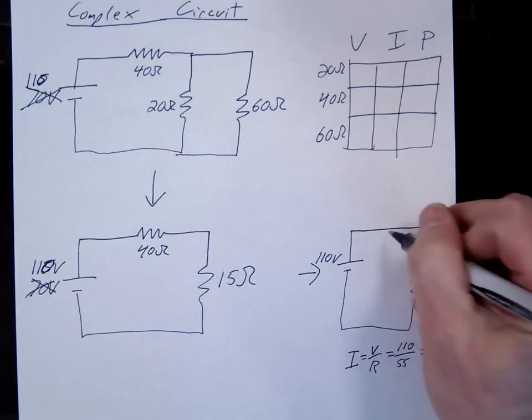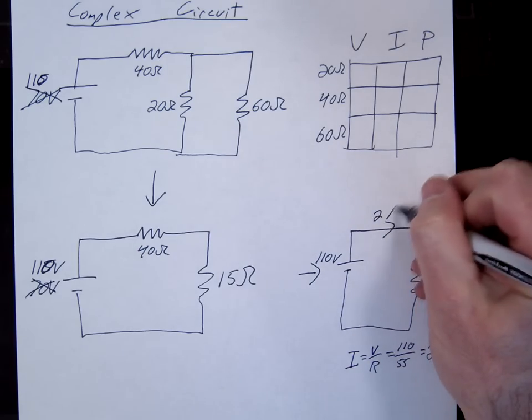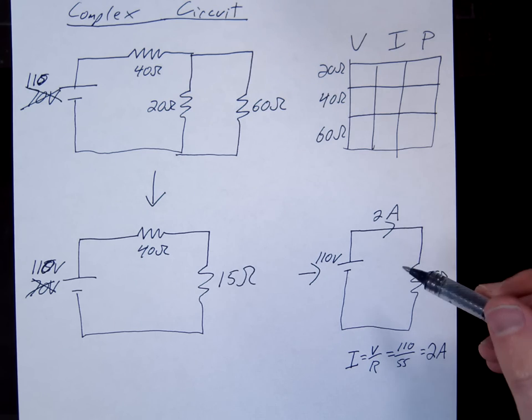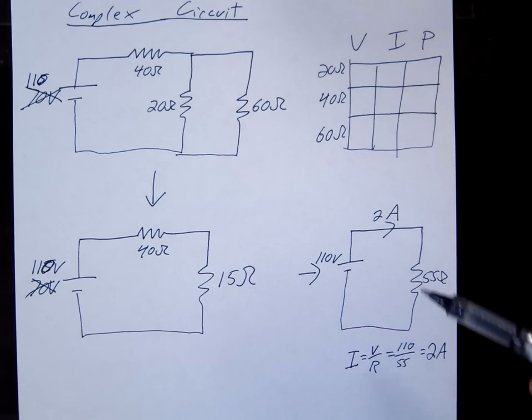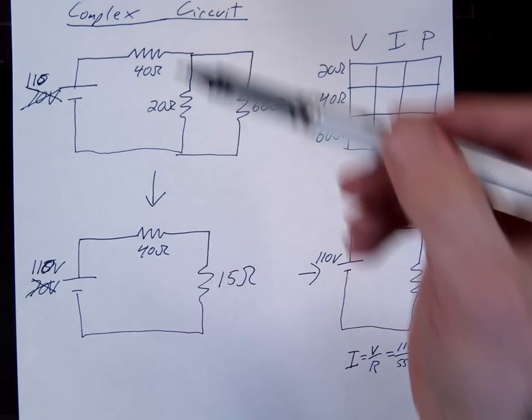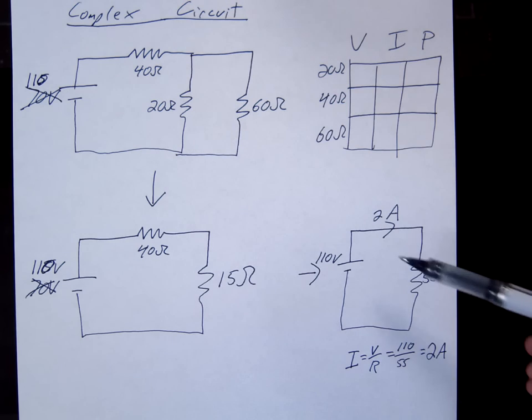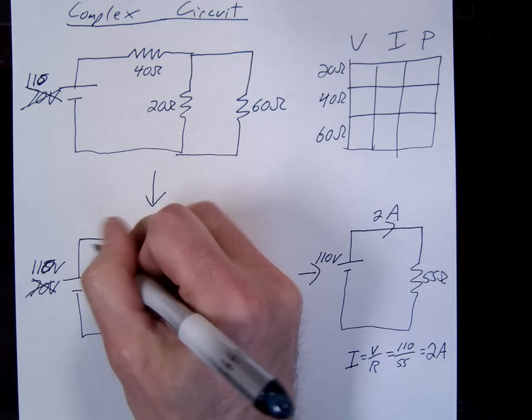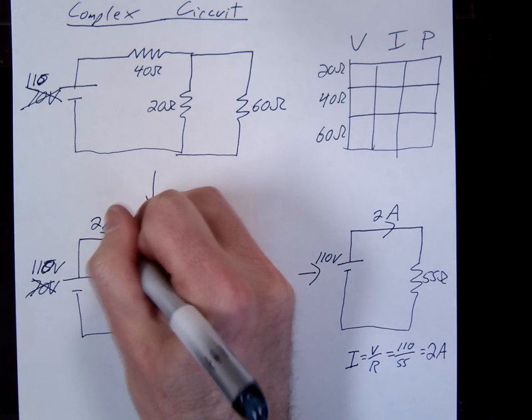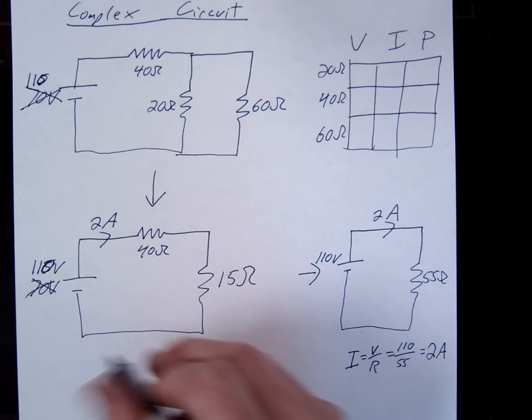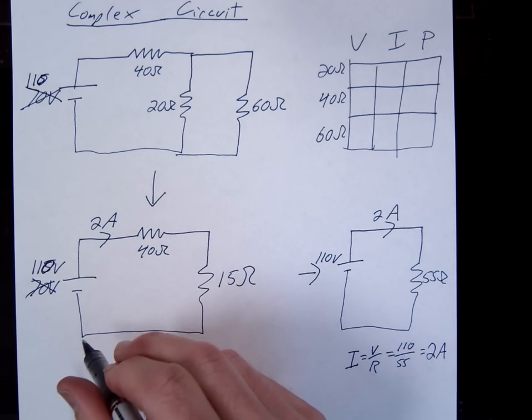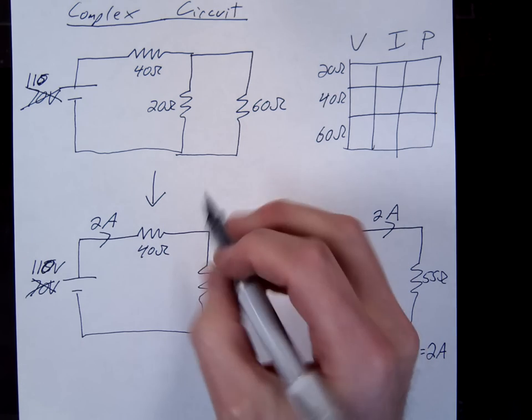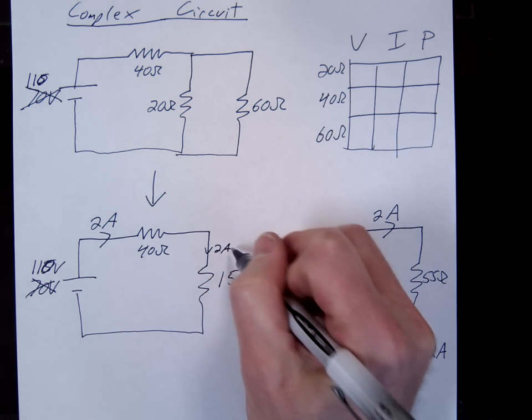Okay, so what we've just found is the current through here is two amps. Then what we're going to do is just take what we learned and slowly work our way back until we're on the original circuit. So we're on this one. Now we're going to say, okay, two amps is moving through here. But what do we know about series circuits? They get the same current. There's only one current, so they get the same current. So there's two amps moving through the forty. There's also two amps moving through the fifteen.